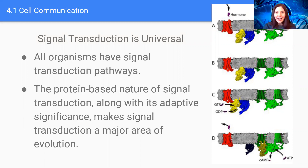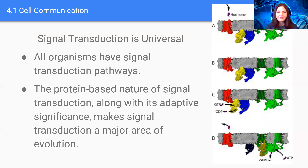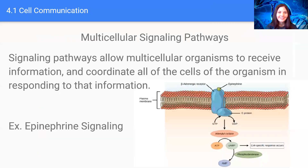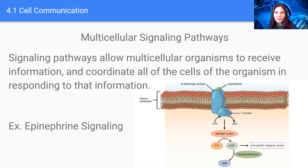All of those organisms have signal transduction pathways because they all have to communicate. The protein-based nature of a signal transduction pathway along with its adaptive significance makes signal transduction a major area of evolution. In multicellular organisms, signaling pathways allow them to receive information and then coordinate it with all the cells in the organism in responding to that information, and our body is constantly being bombarded with cell signals.